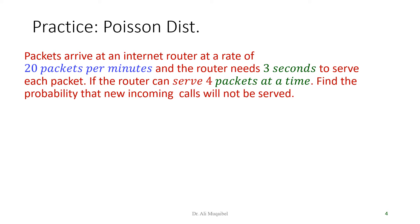Here is a practice problem. Packets arrive at an internet router at a rate of 20 packets per minute, and the router needs 3 seconds to serve. We have lambda, we have T. If the router can serve 4 packets at a time, find the probability that new incoming calls will not be served. This is like asking the question: what's the probability of having 5 or more? If you are told it's Poisson, you just use the equation. Remember these equations for the CDF.